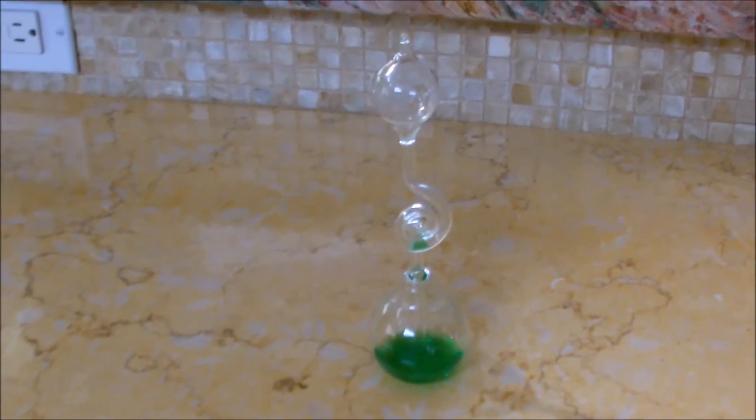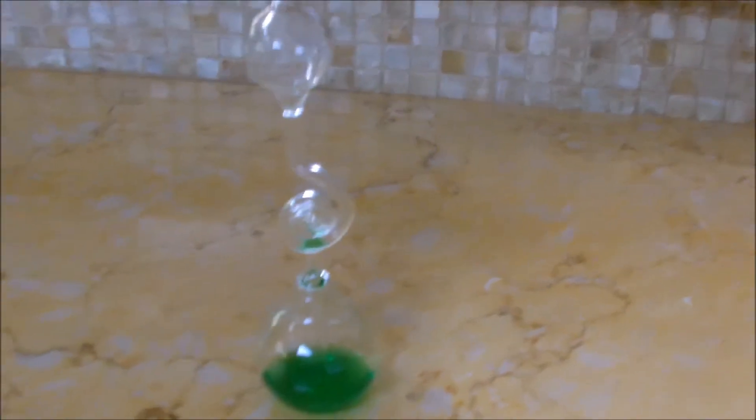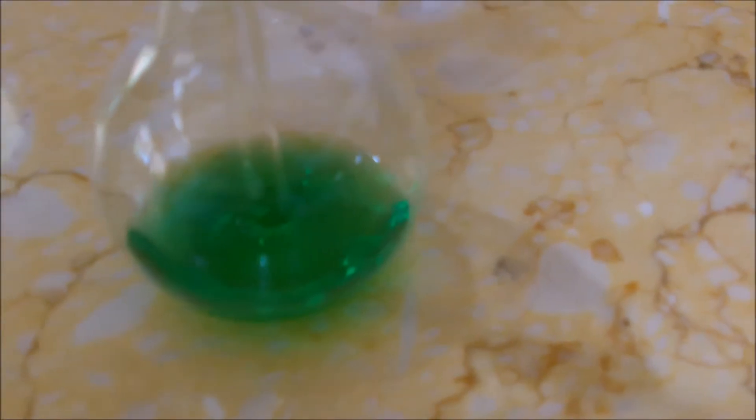The next physics toy demonstration is this neat little contraption, which has a small amount of liquid on the bottom. It is most likely an alcohol. And there is some glass tubing going up from the bottom bulb to a higher bulb.